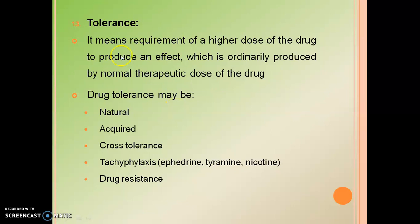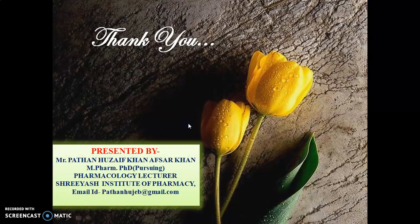The next factor is tolerance, which means the requirement of a higher dose of a drug to produce an effect that is ordinarily produced by the normal therapeutic dose. Drug tolerance may be natural, acquired, or cross-tolerance. Tachyphylaxis occurs with drugs like epinephrine, tyramine, and nicotine. This concludes the second part of Pharmacodynamics. Thank you.